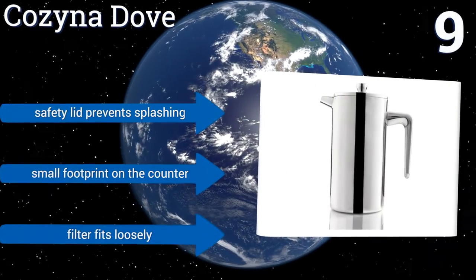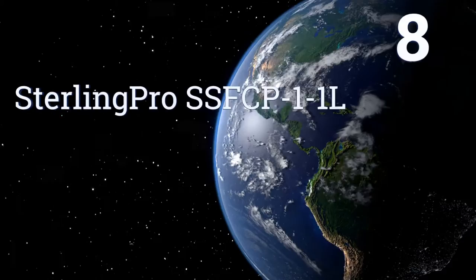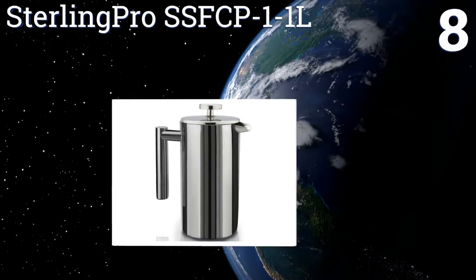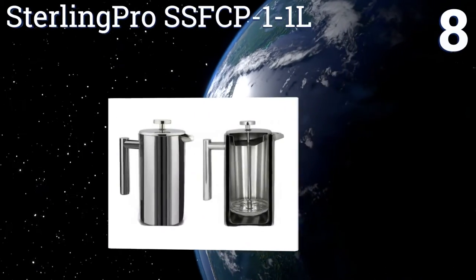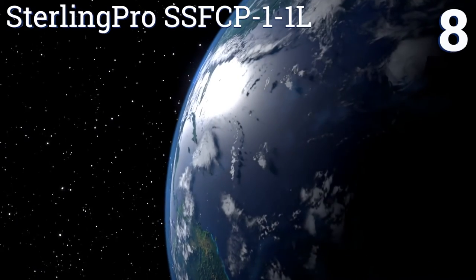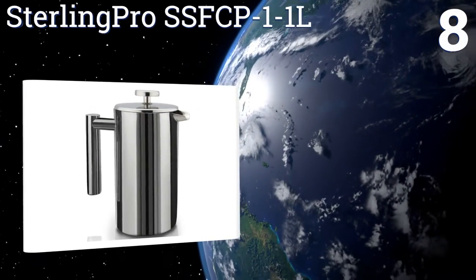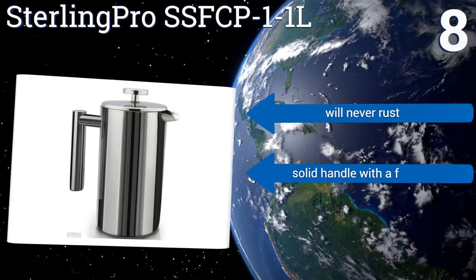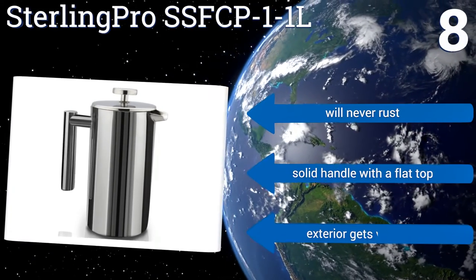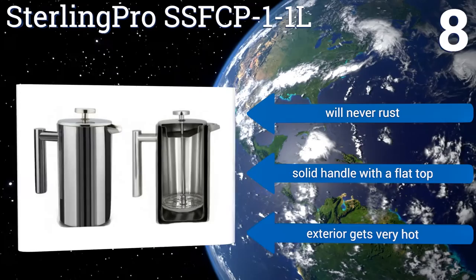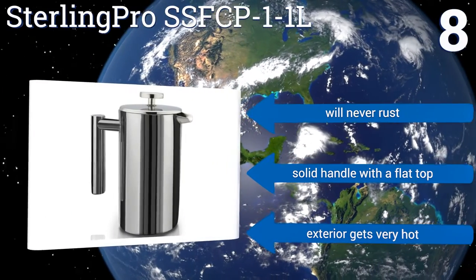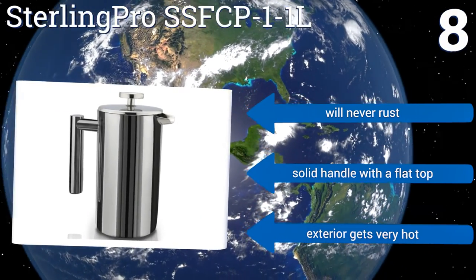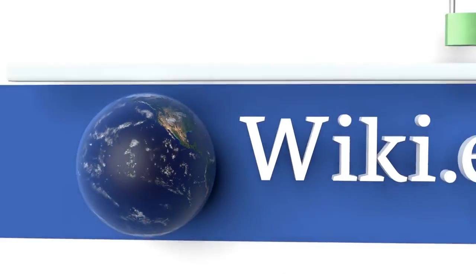Coming in at number eight on our list, the Sterling Pro SSFCP-1-1L produces a smooth coffee with no grounds to get stuck in your teeth. It achieves this by using a double screen system that tightly hugs the walls as you press, preventing even the smallest grains from slipping through. It'll never rust and includes a solid handle with a flat top. However, the exterior gets very hot.